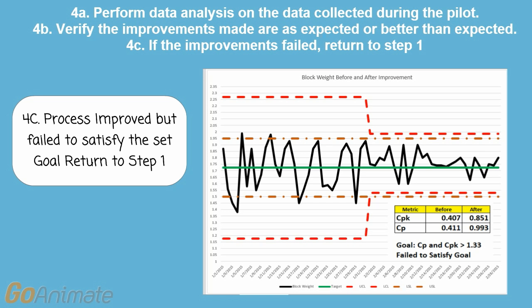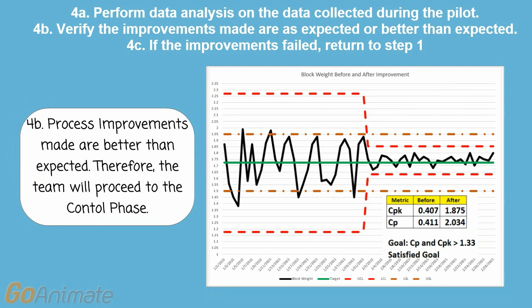In this chart of before and after improvement implementation, we see that the process improved but failed to satisfy the set goal. Therefore, the team will return to Step 1. In this second chart, we see that the process has surpassed the set goal of 1.33 with a CPK of 1.87 and a CP of 2.034. Therefore, the team will proceed to the control phase.